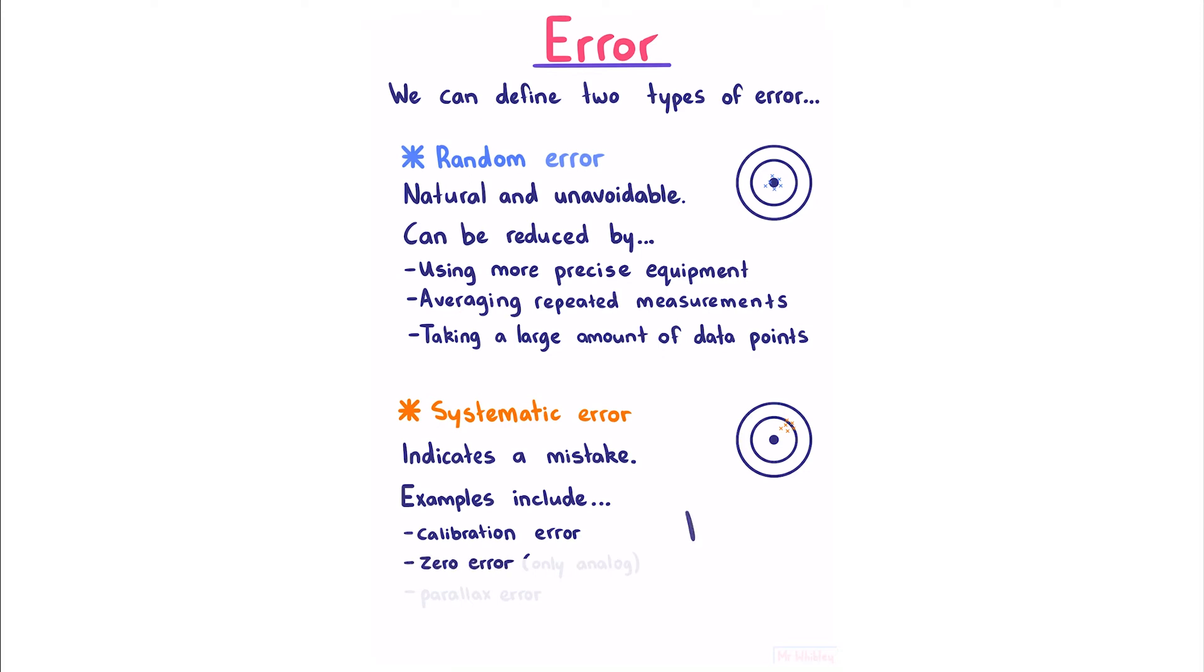Zero error. For example if we were measuring the length of a brick, and we had our ruler here, say we measured this to be 5cm. Our mistake however, is that we haven't lined up zero correctly. This is a zero error.